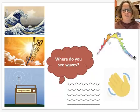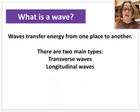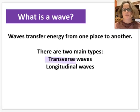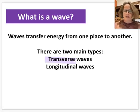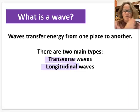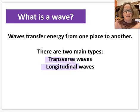When we're thinking about wave in science, we're thinking about something particular — waves that transfer energy from one place to another. There are two main types: transverse waves, where waves move particles up and down as the wave energy moves from side to side, and longitudinal waves, where particles move forwards and backwards as the wave energy passes along them.